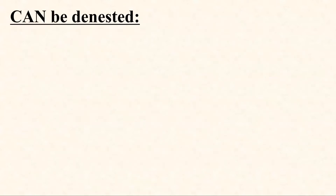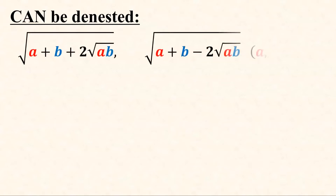However, there are also many special cases of nested radicals that can be denested. In this video, I will explain one of such special cases, and that is the nested radical in the form of: square root of (a plus b plus 2 times the square root of ab), and square root of (a plus b minus 2 times the square root of ab).